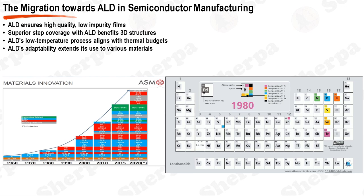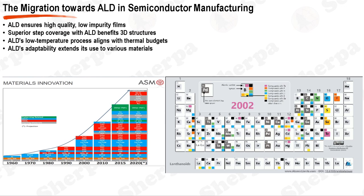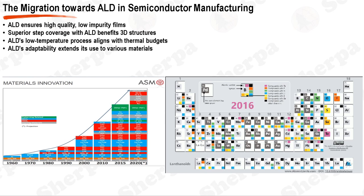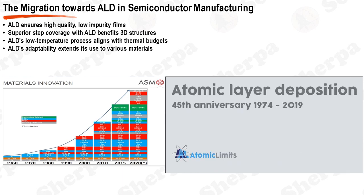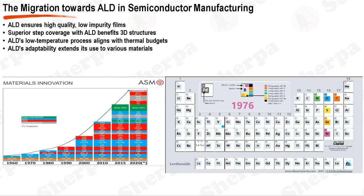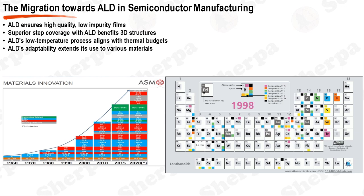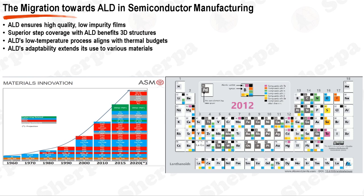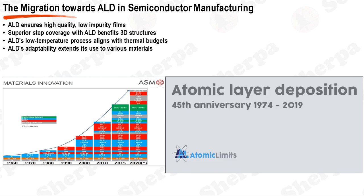However, the process requires specialized equipment and can be complex to control, resulting in relatively high costs. As device architectures have evolved towards 3D structures with high aspect ratios, the importance of achieving high step coverage has grown. ALD has proven advantageous, with its superior step coverage capabilities being employed for the deposition of metal insulator metal, MIM, capacitors and electrodes, and low-K gate spacers. The trend towards lower thermal budgets necessitates low-temperature technologies, and ALD is able to deposit films at relatively lower temperatures, making it suitable for double patterning technology, DPT, oxides.